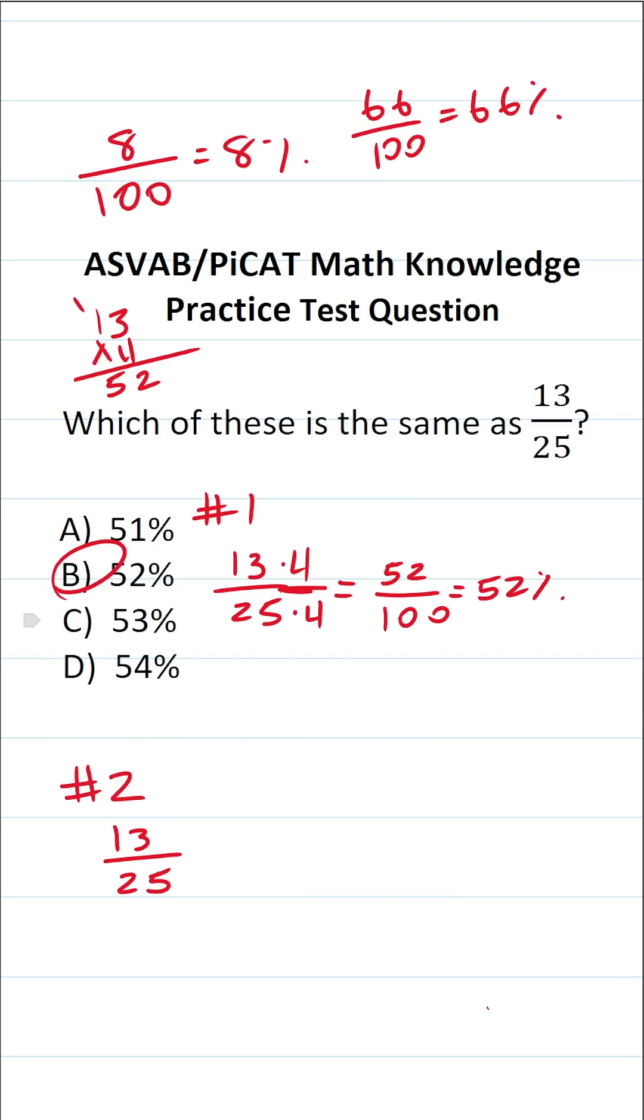Now, in the event that you can't easily rewrite the fraction such that it has a denominator of 100, the next method will work 100% of the time. And it's by treating this as long division.